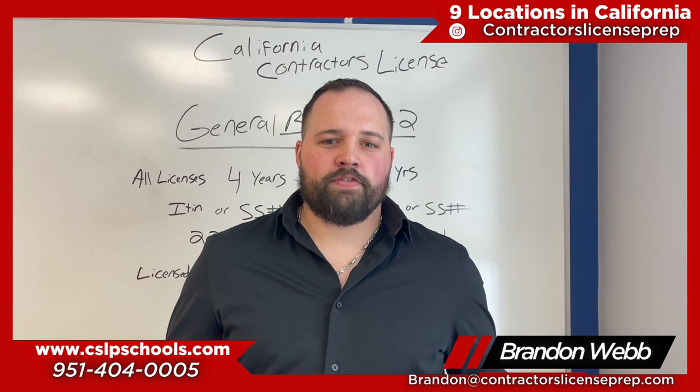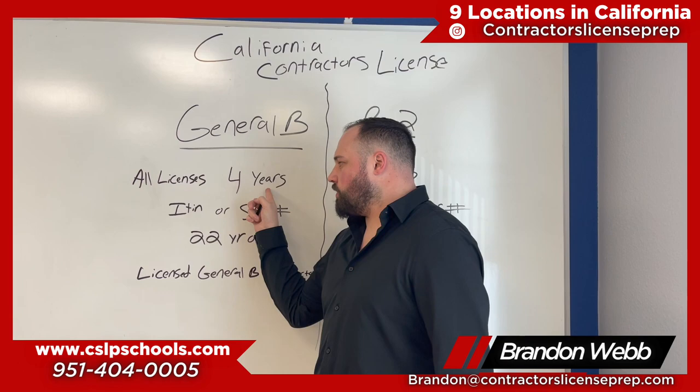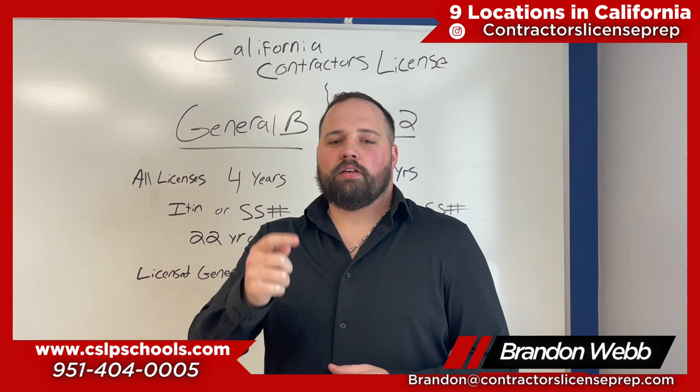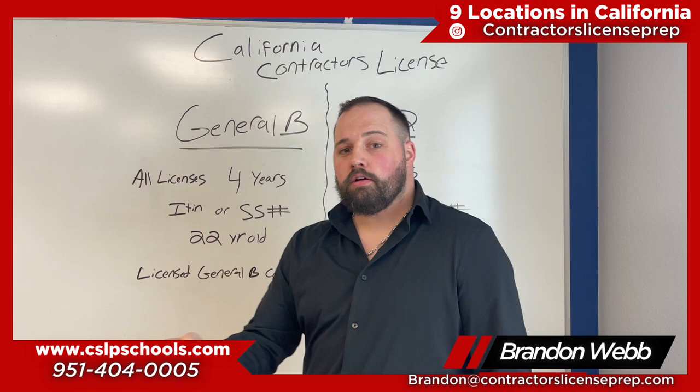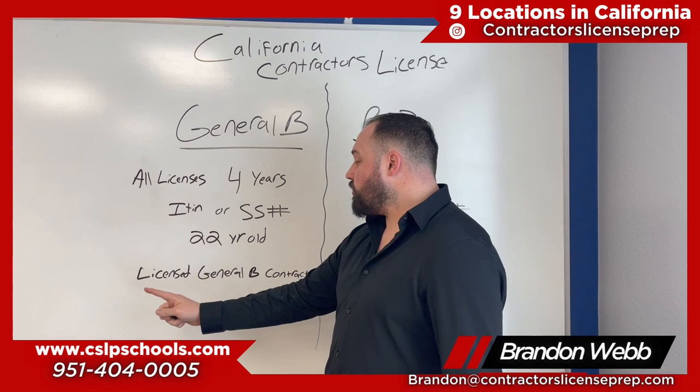Let's get into the qualifications for the general B and the B2. Starting with the general B — for any contractor license in California, you need at least four years of experience in the trade, an ITIN or a social security number, and you need to be at least 22 years old. The state of California says you can start at 18, but your four years of experience begin at age 18, so four years later makes 22 the minimum age to get a contractor license in California.